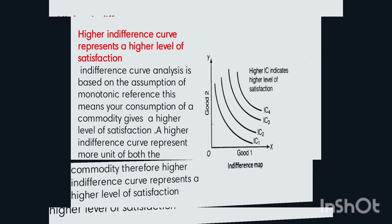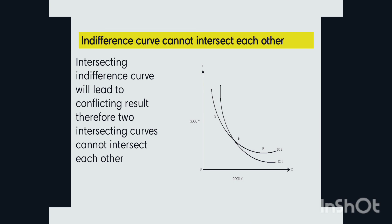Indifference curves cannot intersect each other. When indifference curves intersect, it leads to a conflict in results. For example, you can see two curves, IC1 and IC2, intersecting each other at a point where A and B lie on the same point.